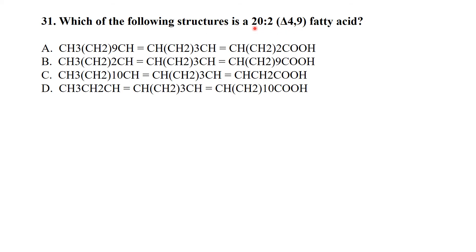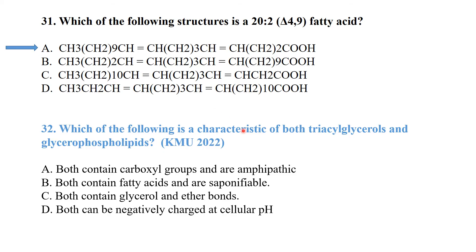For the structure 20:2 delta 4,9 — there are 20 carbons total, two double bonds, one at position 4 and one at position 9. The answer corresponds to the option showing exactly these features: 20 carbons, double bond at position 4 and double bond at position 9.